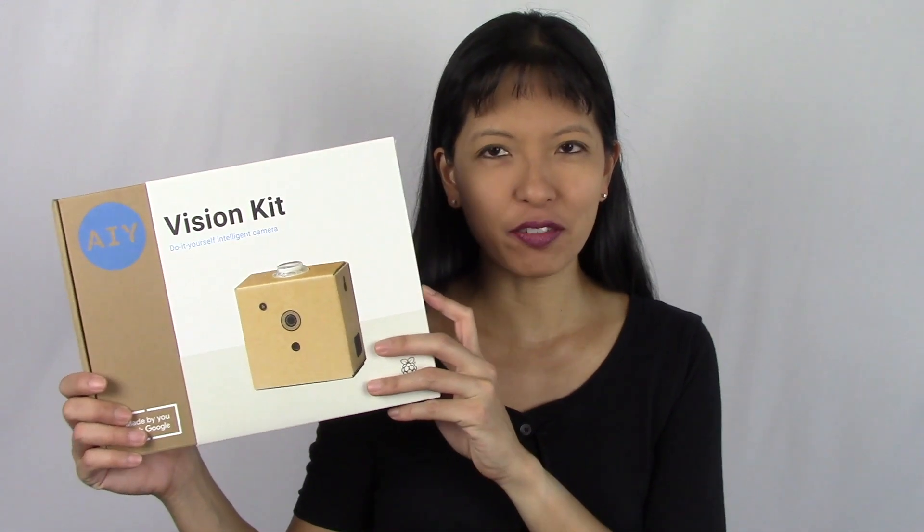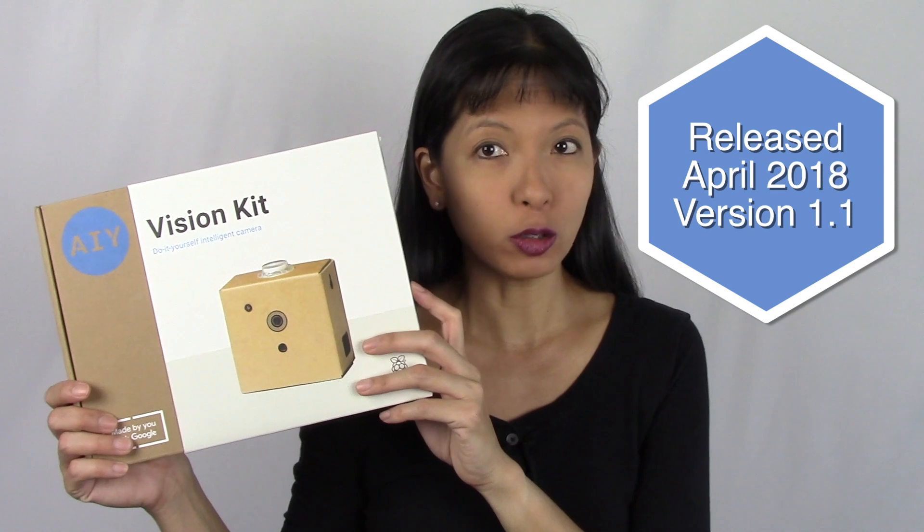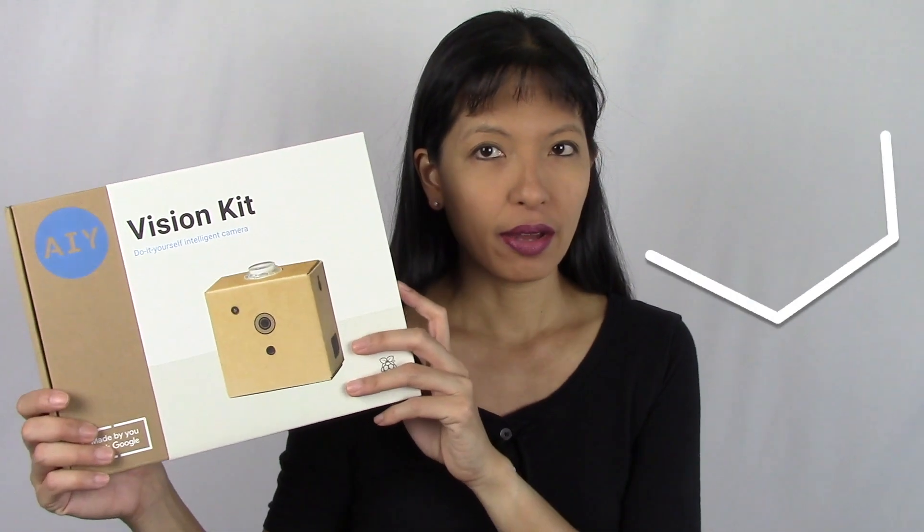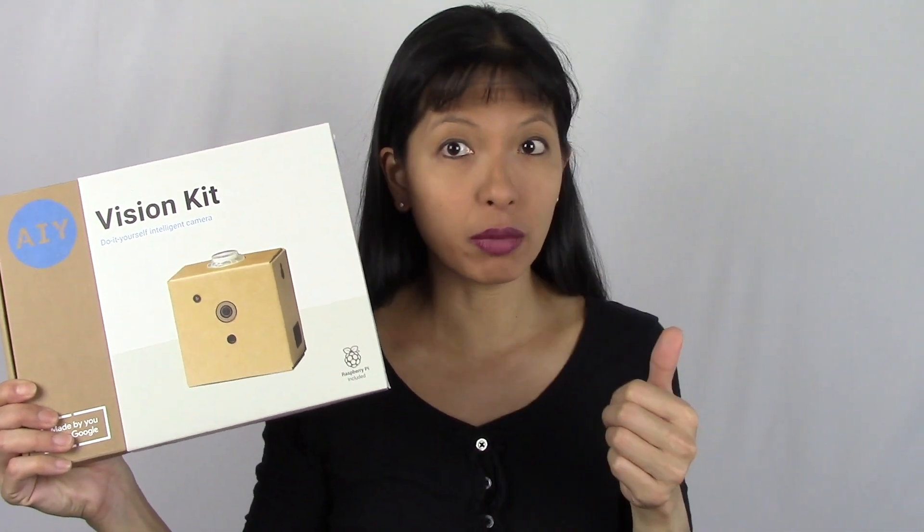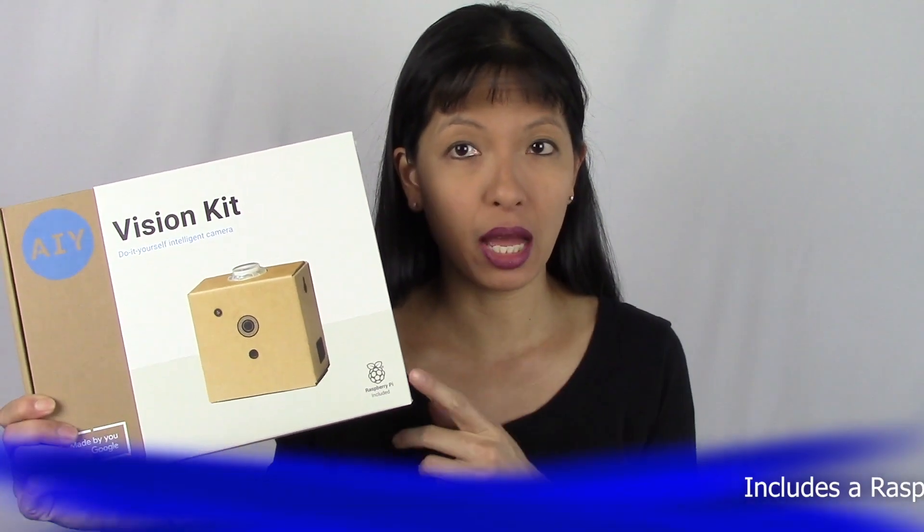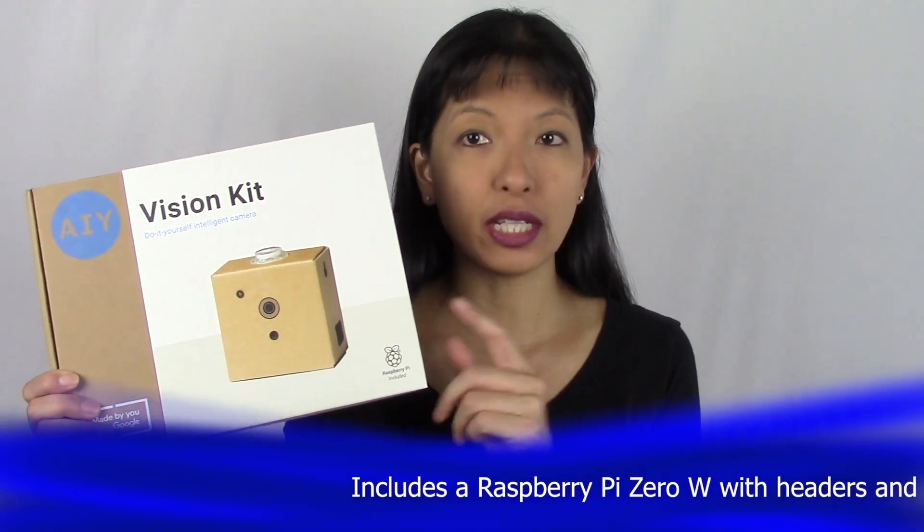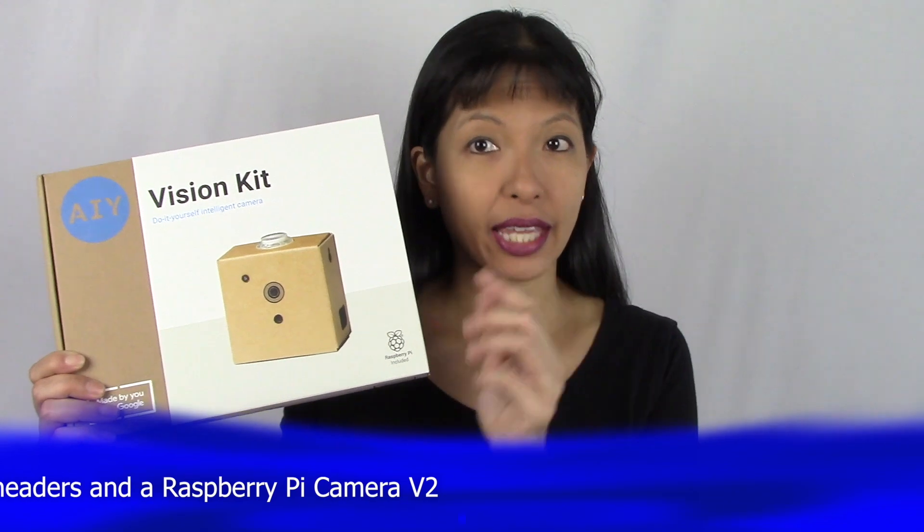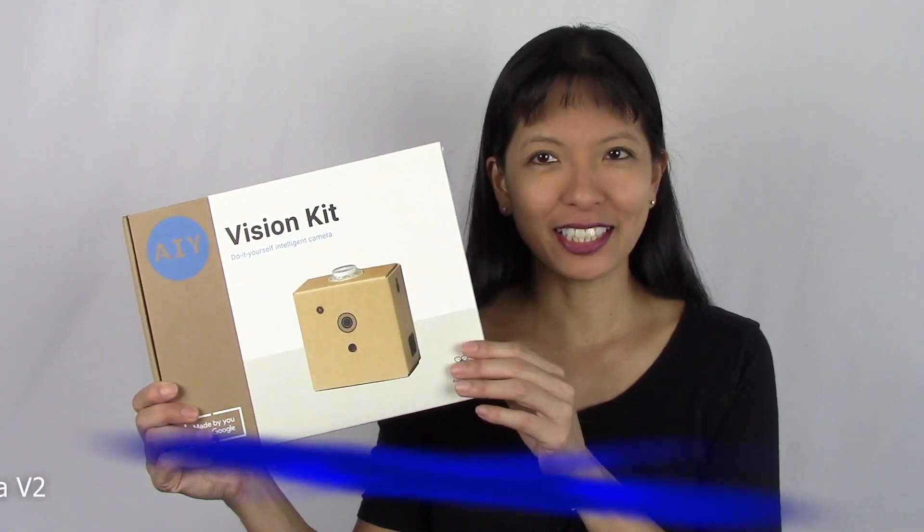Hi everyone this is Caroline. In this video I am assembling the AIY Vision Kit. I just purchased this from Target. This is the edition that was released April 2018. It is a v1.1 version. The original version did not include a camera nor did it include the Raspberry Pi. This includes a Raspberry Pi Zero W with headers and the camera as well. So let's get started.